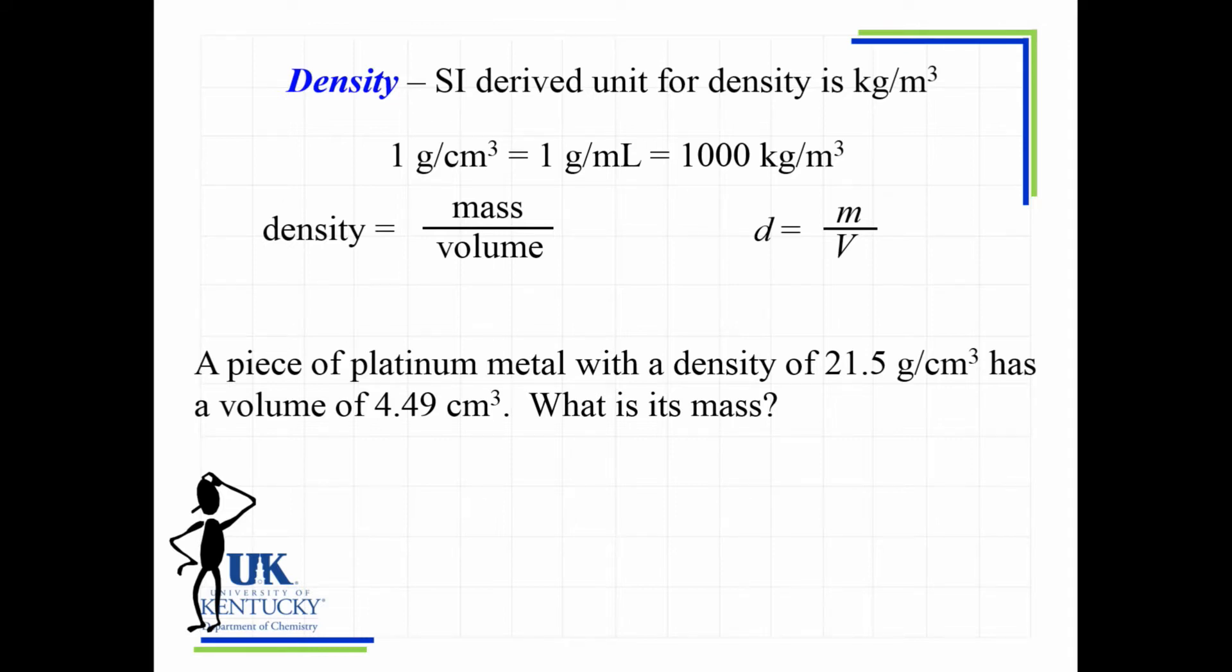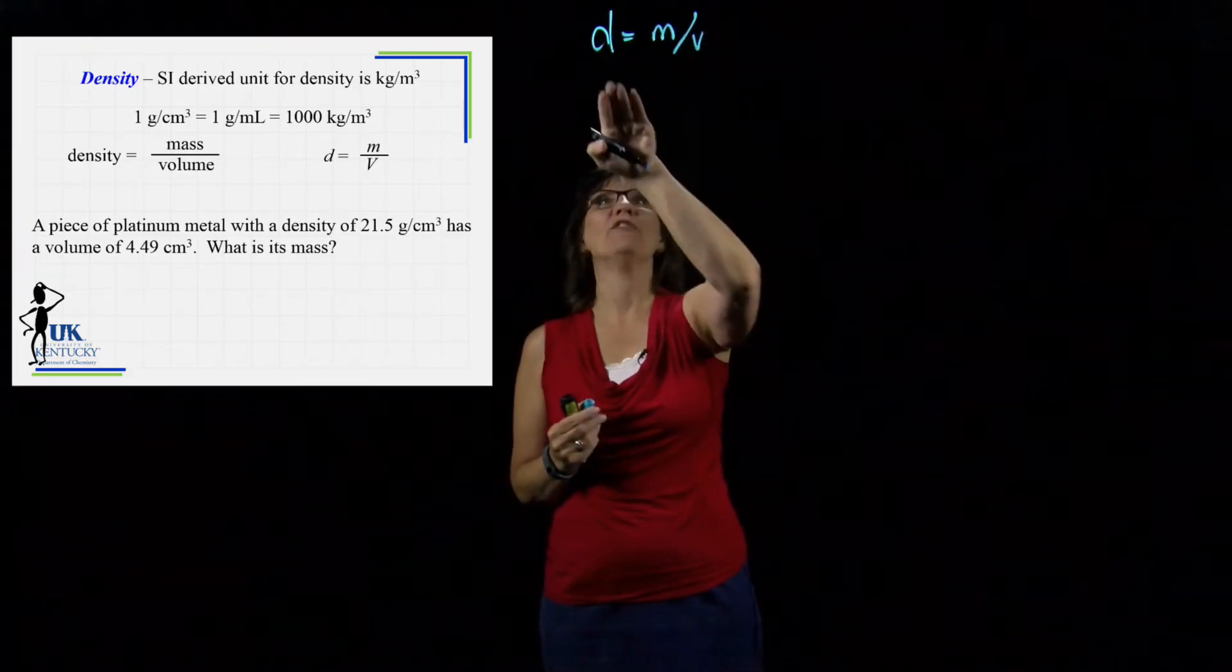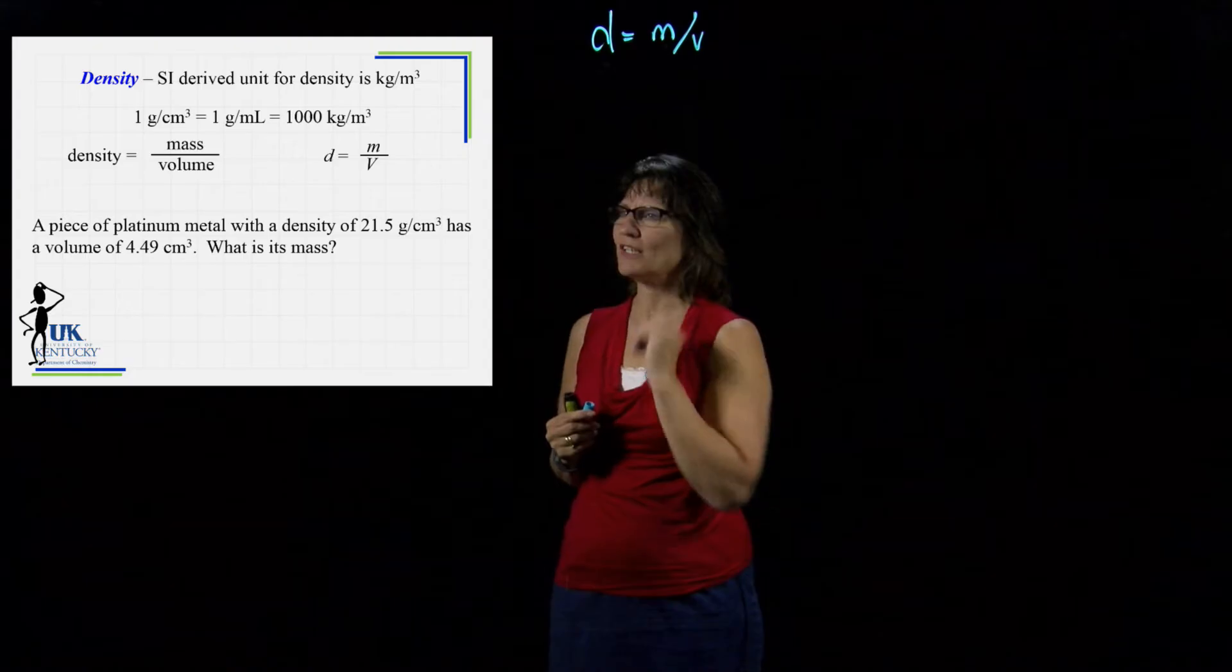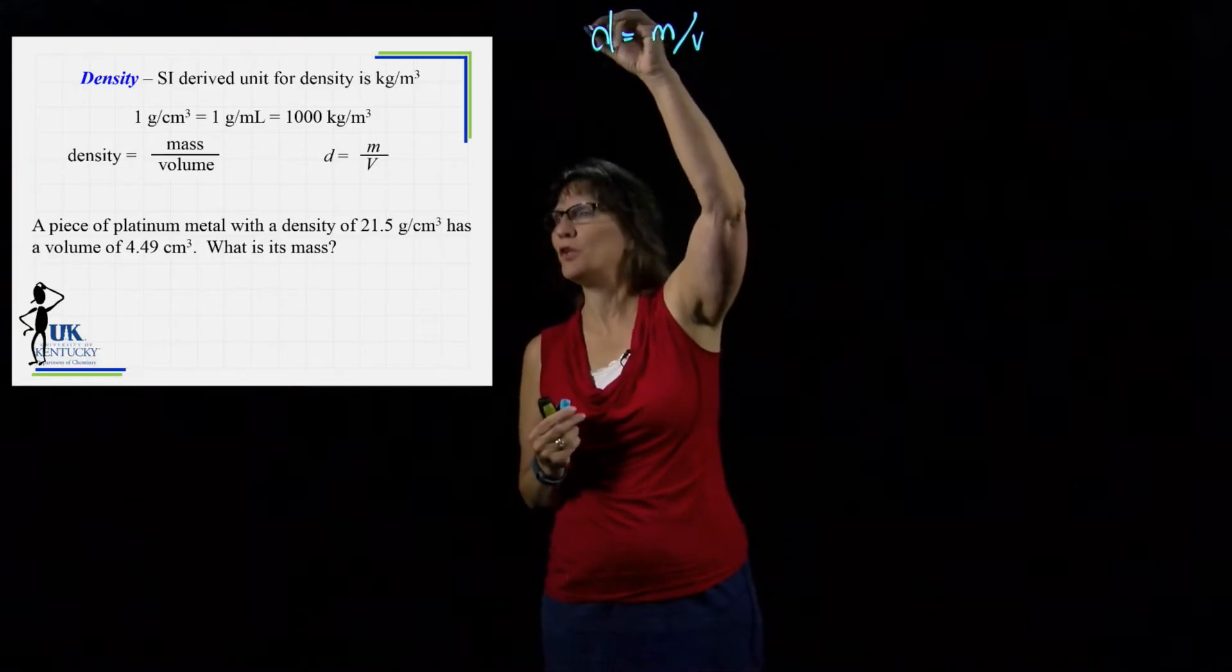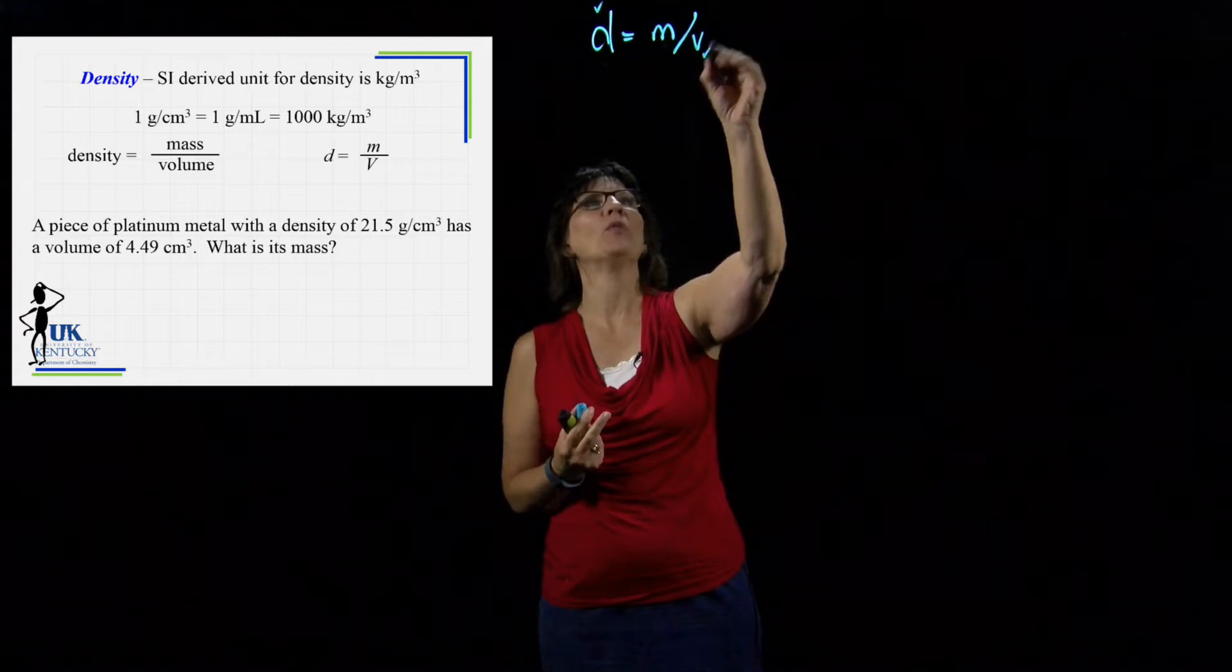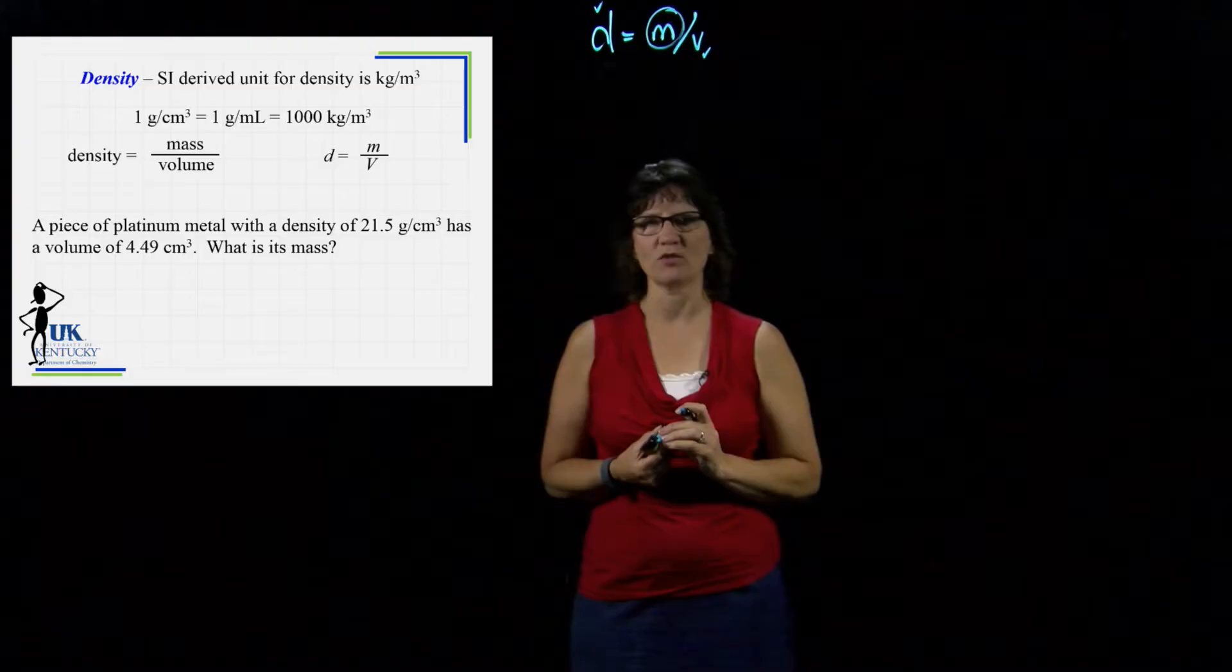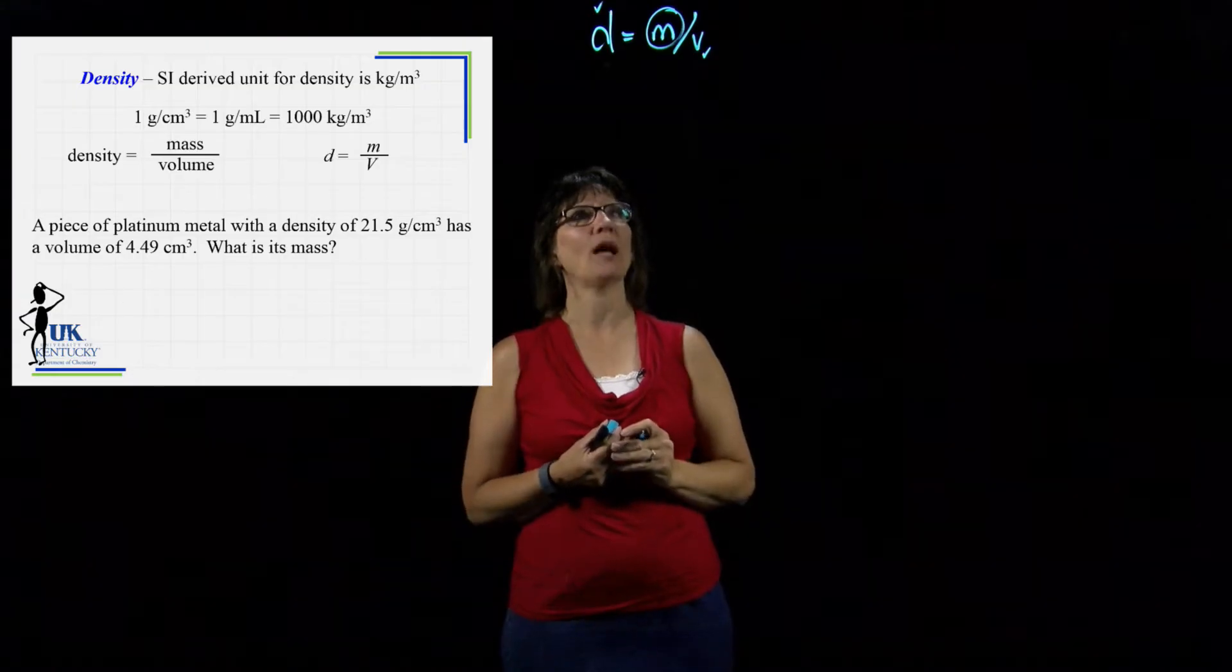We're going to work through this problem. Density equals mass over volume. If you want to calculate density, we need to plug in the mass and volume. But in this problem, we're actually given density. Density is 21.5 grams per cubic centimeter. We're given volume, and we're being asked to calculate the mass of this object. So I would take this equation and algebraically solve for the variable I'm looking for.